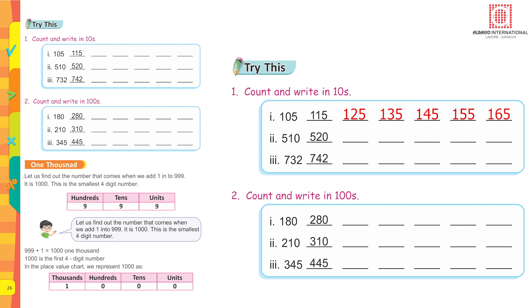Count and write in hundreds: 180 plus 100 equals 280, plus 100 equals 380, plus 100 equals 480, plus 100 equals 580, plus 100 equals 680, plus 100 equals 780. Now I am sure you are capable enough of doing question number 2 and 3.